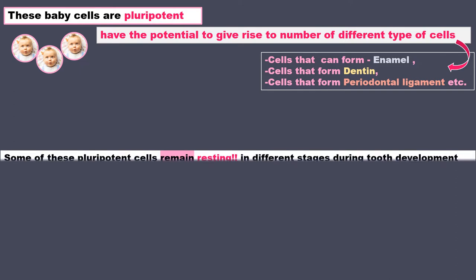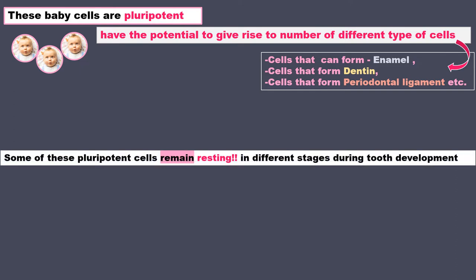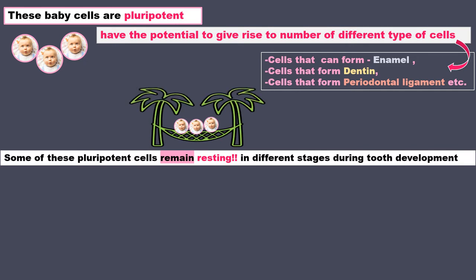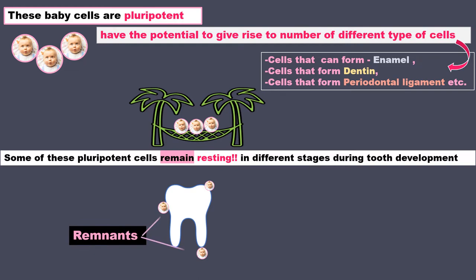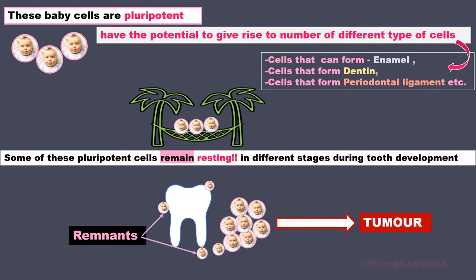Some of these pluripotent cells remain resting in different stages during the process of tooth development — they are not growing up into adult cells that form enamel, dentine, etc. These are called the remnants. Some of these remnant baby cells suddenly decide that now they want to proliferate, and this is what gives rise to the tumor which we call ameloblastoma.